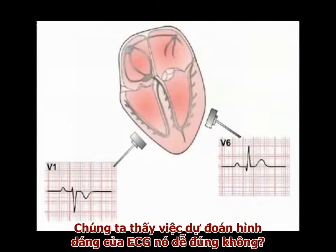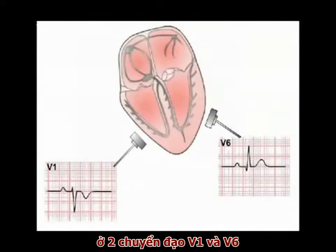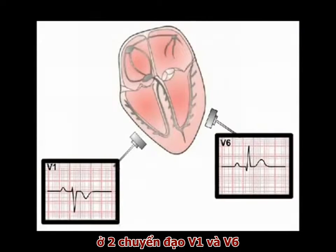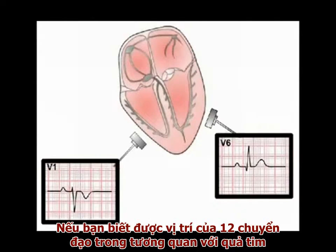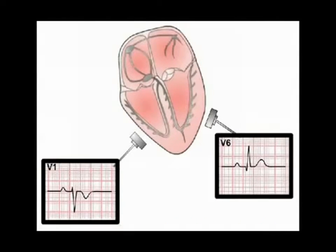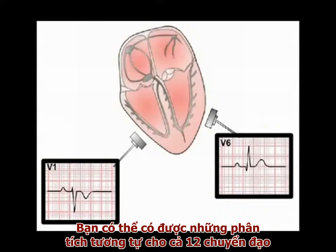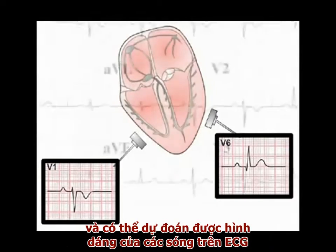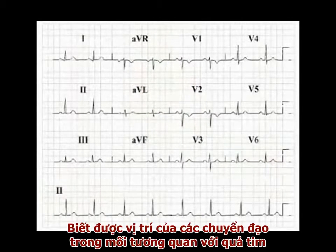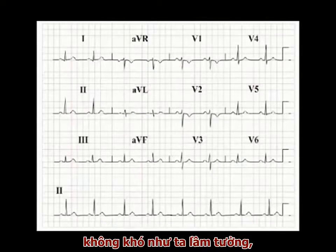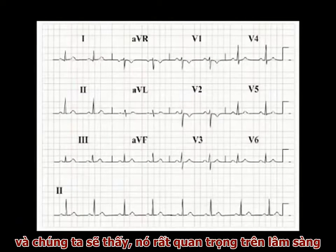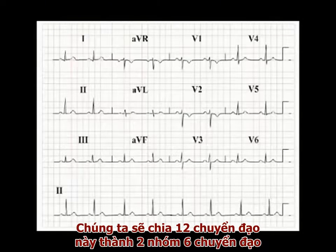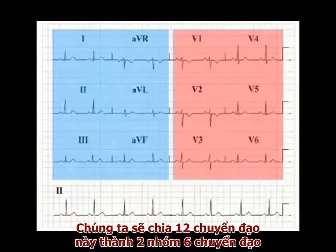You've seen how easy it is to predict the form of the ECG readout in two of the chest leads, V1 and V6. If you know the position of each of the 12 leads of the ECG relative to the heart, you can carry out a similar analysis in all 12 leads and build a predicted ECG. Learning the position of the leads of a standard ECG relative to the heart is not as difficult as it sounds, and as we'll see later, pays dividends in clinical practice. Consider the 12 leads in two groups of six.